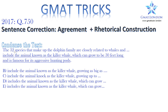The first difference would be: is it 'include' or 'includes'? Ask yourself, who or what includes the animal known as a killer whale? It's 'the 32 species' — which is plural — so we go for the plural verb 'include'. So: 'the 32 species include the animal known as the killer whale.'